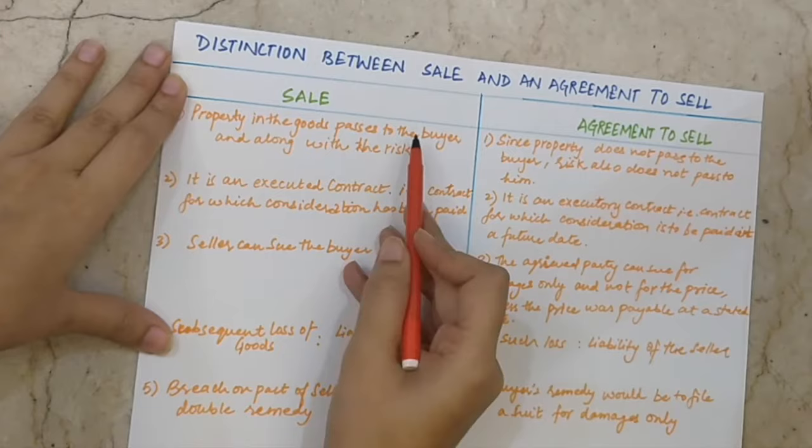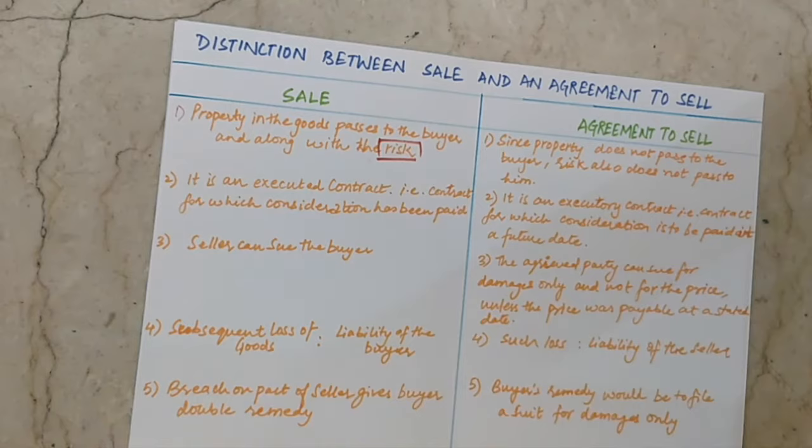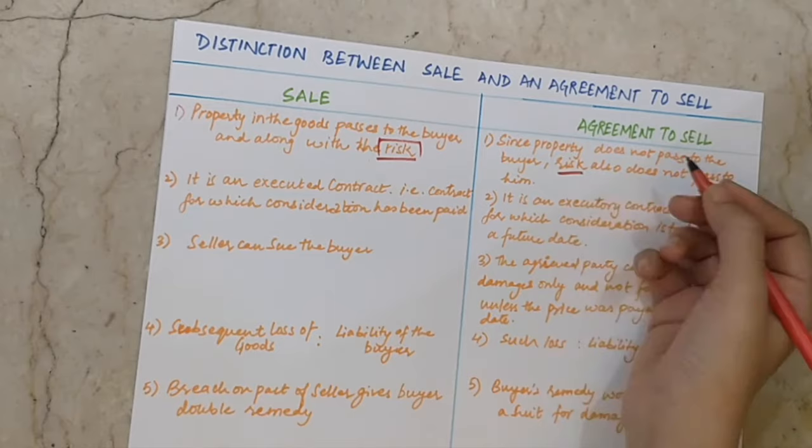The first difference: in a sale, property in goods passes to the buyer along with the risk. In an agreement to sell, since there is no transfer of property, there is also no transfer of risk.